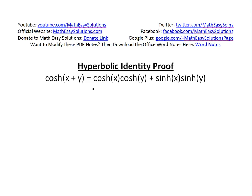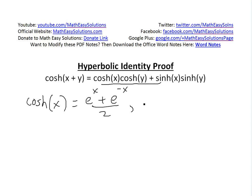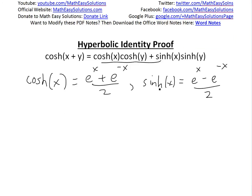We can just use the definition of hyperbolic cosine and hyperbolic sine to prove this by substituting into the right-hand side. We know that cosh of x equals e to the x plus e to the negative x, divided by 2. And sinh of x is equal to e to the x minus e to the negative x, divided by 2 — the same thing but with a minus sign. So we just plug the definitions in for these four functions and we will prove it.